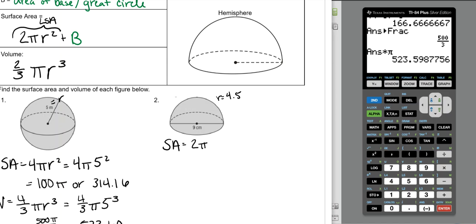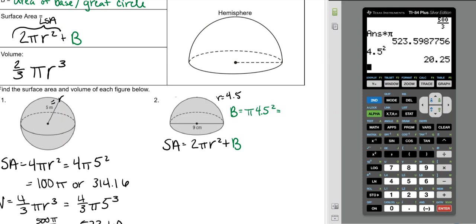The surface area is 2πr² + B. We don't know what B is yet, so we need to come up with that. That's the area of the base or the area of that big circle at the bottom, the great circle, which is πr². So π times 4.5². 4.5² is 20.25π. So when I fill this in, it's going to be 2π(4.5²) + 20.25π.